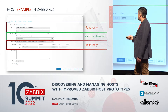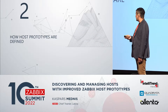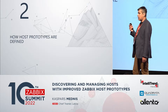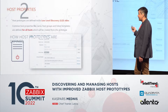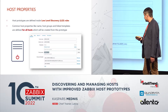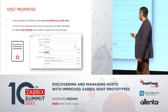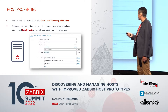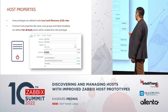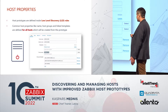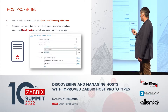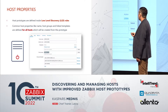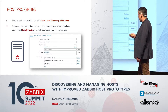To create hosts you need to begin with LLD and then define the host prototype. It's pretty simple — you define how the host will be created: a name, optionally a visible name, some templates, some host groups, maybe some group prototypes, and based on this your host will be created. You may ask: what are those hash values — hash uid or hash name — where are they coming from?